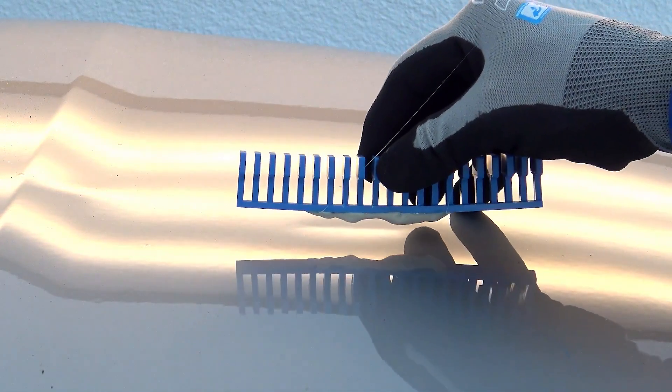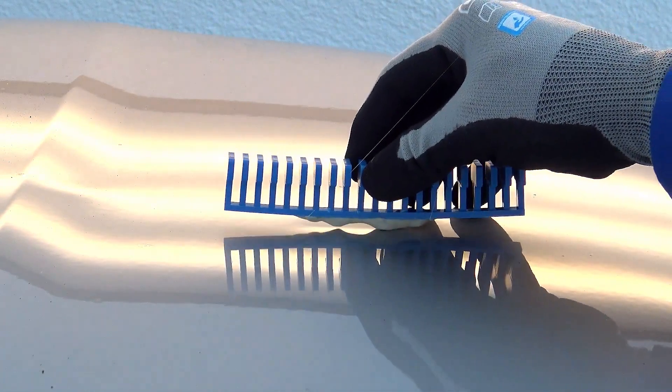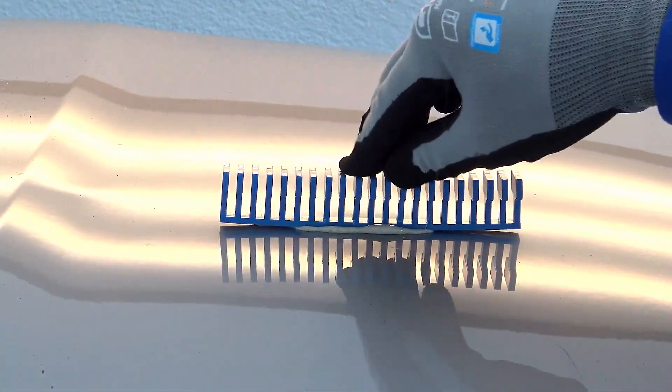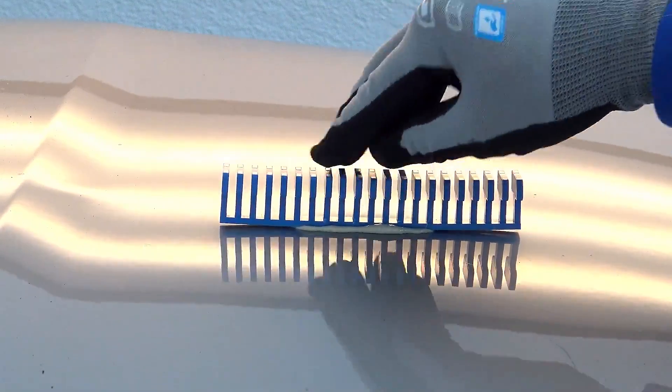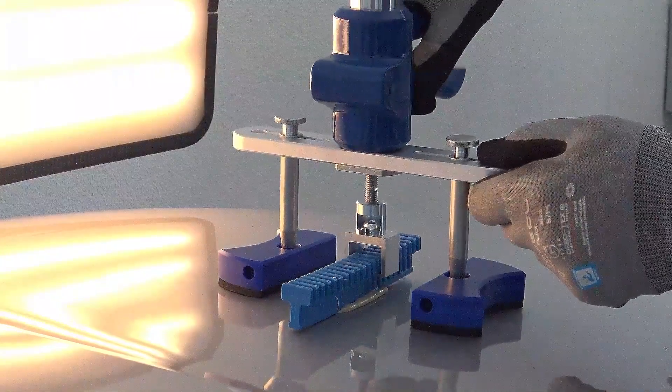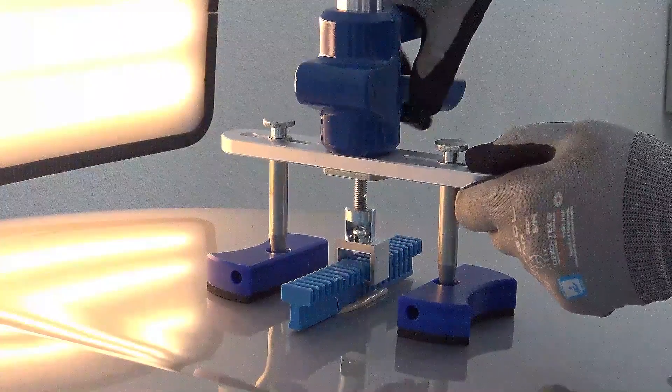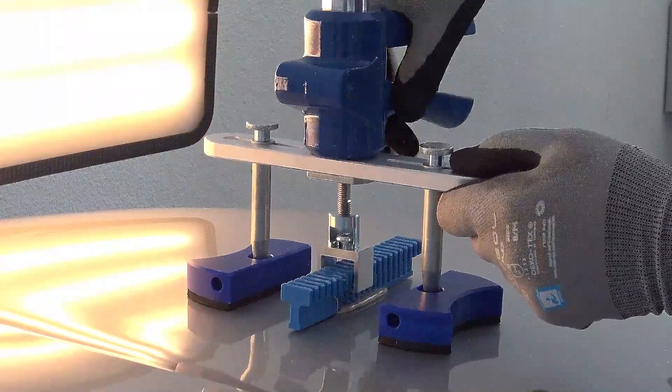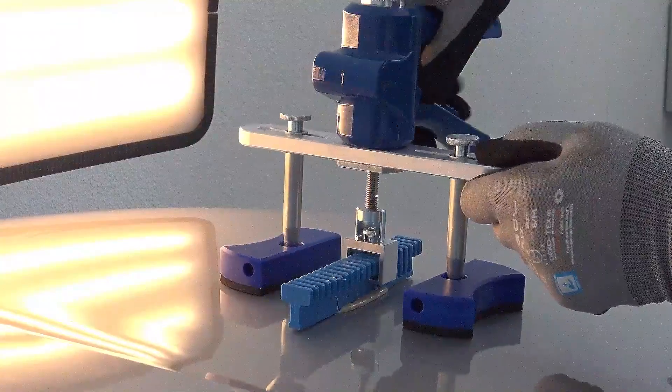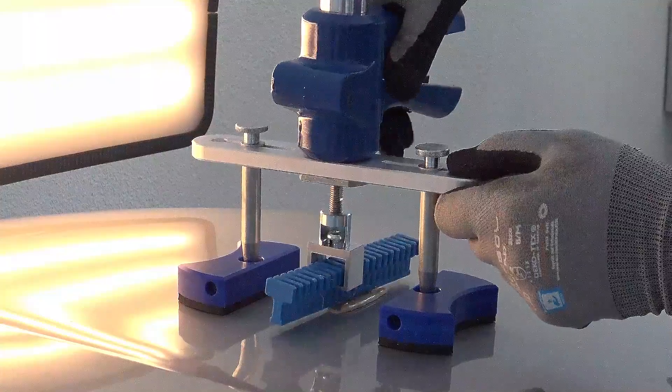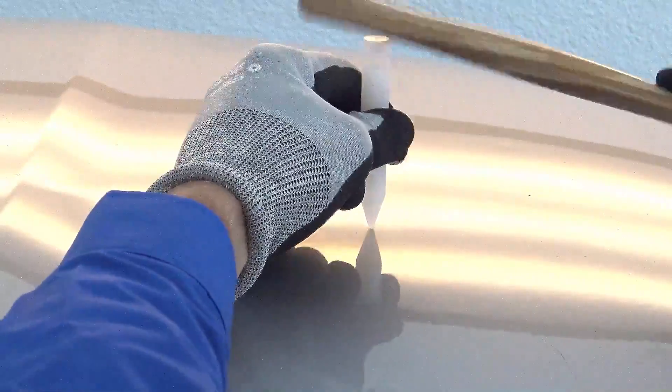With the Speedline puller you can repair creases or line damages. Take the Speedline 8 and glue it on. Let it cool off. With the Speedline puller, work out the crease bit by bit. The over-pulled area can be flattened with the knockdown.